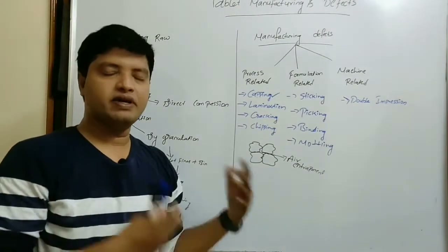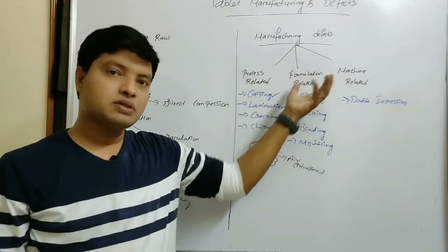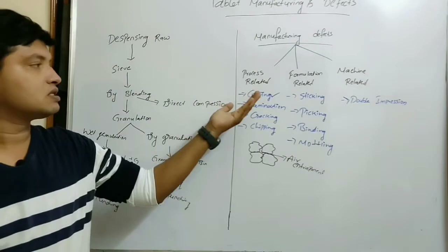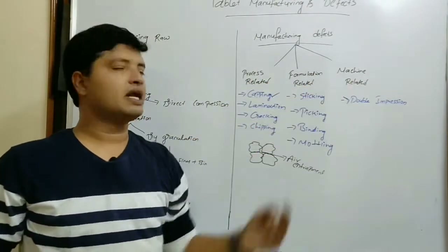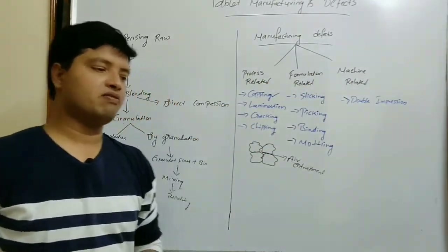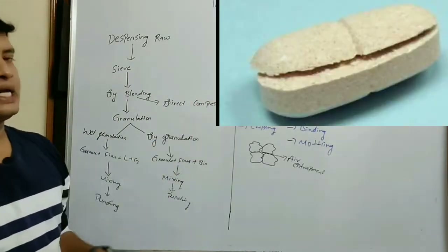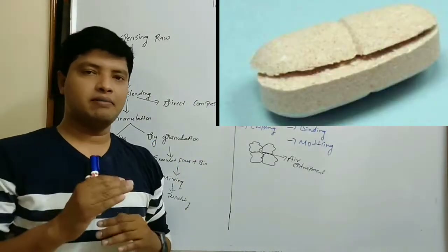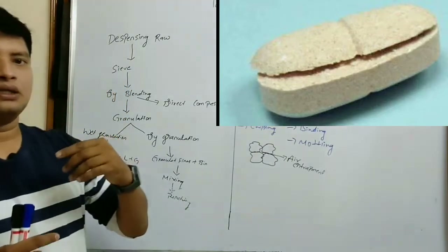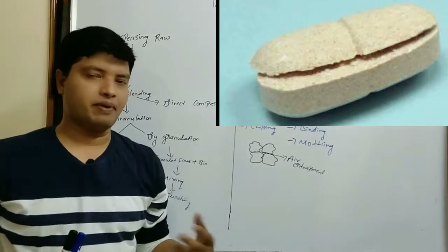For every defect, we have three possible origins: process related, formulation related, and machine related. Now let's see them one by one. What is capping? Capping means division of the tablet into two distinctive layers. The upper part or lower part will come off as a cap — so we call it capping.